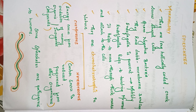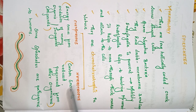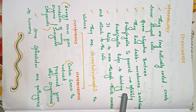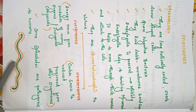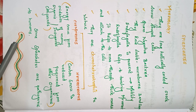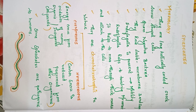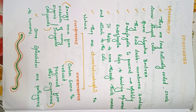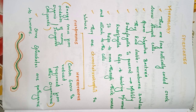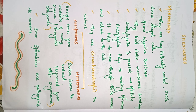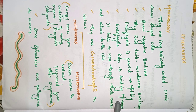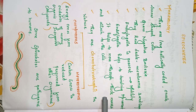The size of spirochetes: breadth is 3 µm and length is 500 µm. Endoflagella are present for motility — the flagella are located inside the bacteria for movement. This arrangement produces a twisting motion, and the flagella are present inside the body of the organism.